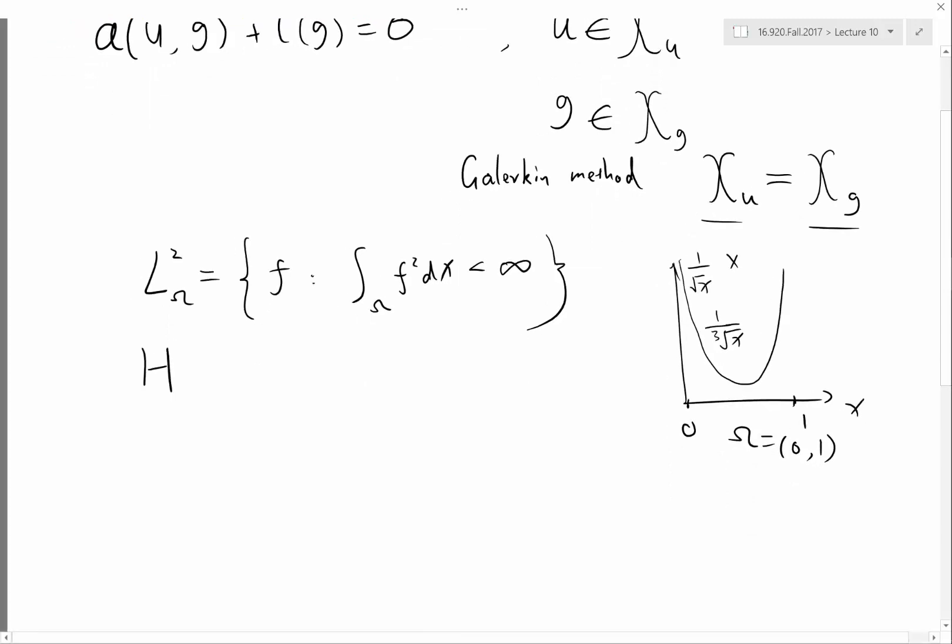But there are also more important Sobolev space, for example, H1. And H1 is the functions for which not only has to be square, the square has to be integrable. Also, the derivative, in general, the gradient squared has to be integrable. So this is the kind of space we want to choose. For example, for Poisson's equation, actually not only for Poisson's equation, for most of the PDEs that involve second order derivatives, usually this space is sufficient.